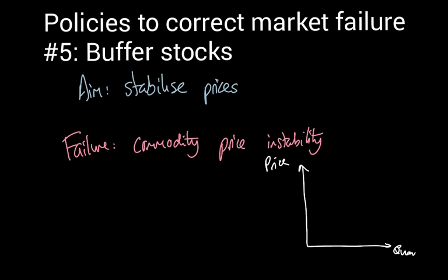So if I do a quick sketch diagram down here, you can see what I mean. For a commodity, we would expect the supply to be relatively inelastic, particularly in the short term. We'd also expect demand to be relatively inelastic because commodities are generally required. There's a degree of necessity around the demand for commodities.